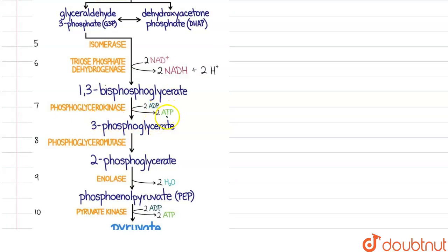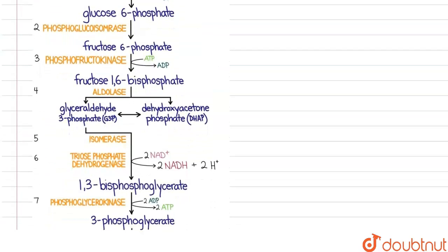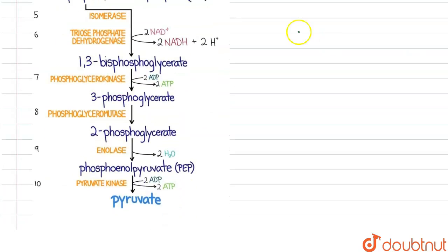Then after that, we have the formation of 3-phosphoglycerate with the help of phosphoglycerokinase, and there is the formation of two ATP. We can see that above we have the utilization of ATP, and in this phase we have the formation of ATP.